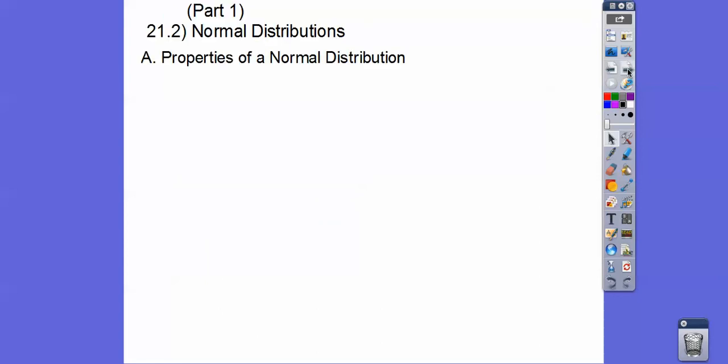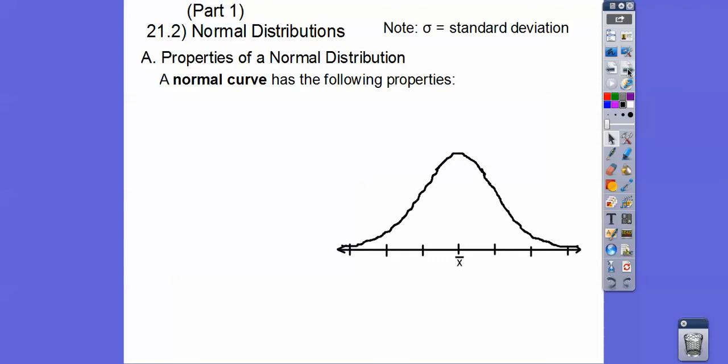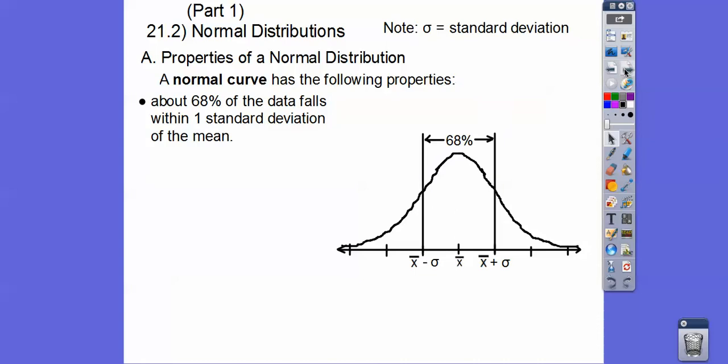So normal distributions, you guys. Properties of a normal distribution. This is a lowercase Greek letter called sigma, and we use that to represent our standard deviation. Now this little x bar right here is our sample mean. So a normal curve has the following properties. About 68% of the data fall within one standard deviation of the mean. So if this is the mean and we subtract one standard deviation and we add one standard deviation, then about 68% of the data is within the mean right there.